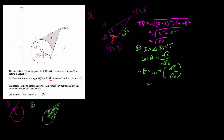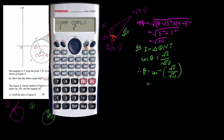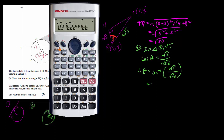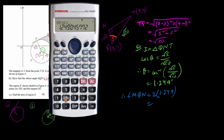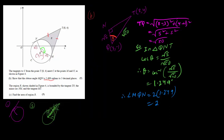Make sure to set the calculator to radian mode. Computing cos⁻¹(√5 / √50) gives 1.249 radians. Remember, this is only half the angle. Since the configuration is symmetric, the full angle MQN is 2 × 1.249 = 2.498 radians. That is exactly what we had to show — 2.498 radians, it is shown.